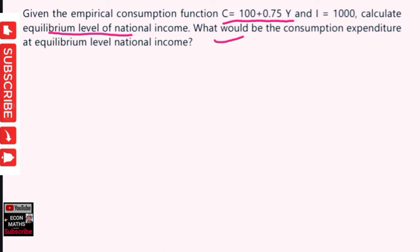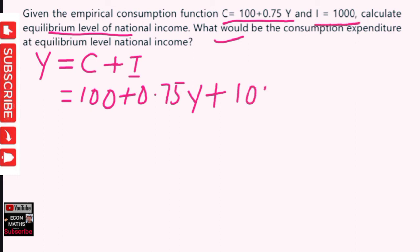As we know, total income or total expenditure is equal to consumption expenditure plus investment expenditure. Here, the consumption expenditure is given as 100 + 0.75Y, plus the investment of 1000. So Y = 100 + 0.75Y + 1000.